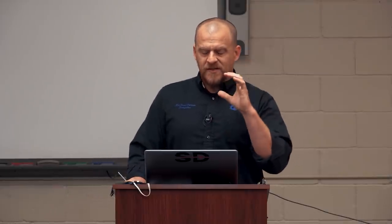Chapters two and three are the most important chapters I've written in that book. This is a power side switched component - how do we know that? With no information inside the computer, you follow the wire that doesn't go to the computer. If it has a ground all the time, then it needs power. If this is a coil of wire that makes a magnetic field, it needs current flow. We have a ground, so we need to apply power - the computer switches power onto this relay. No question about it - this is a power side switched circuit.